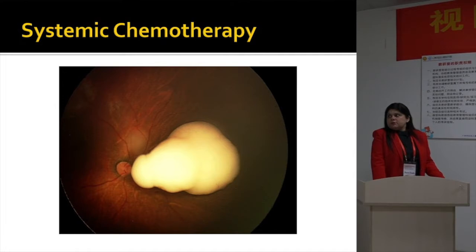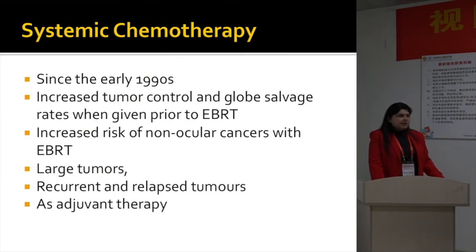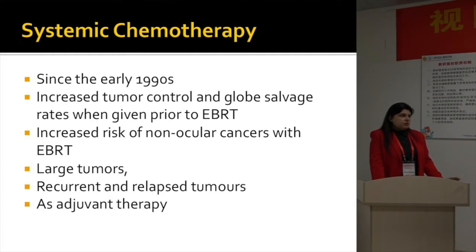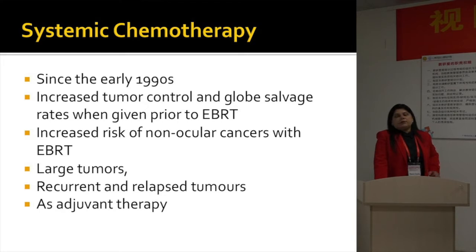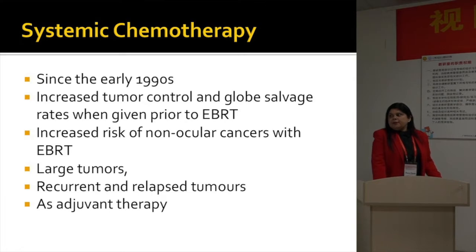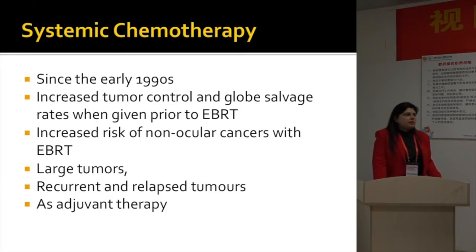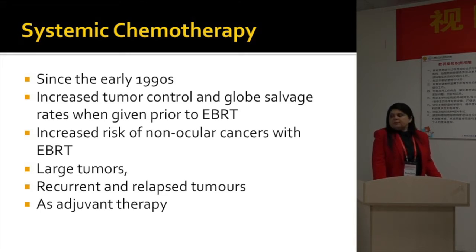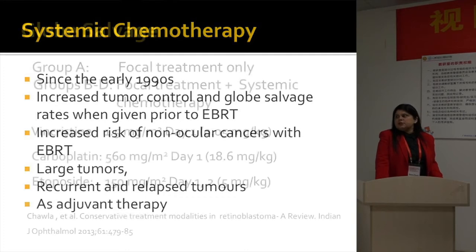When do we use systemic chemotherapy, how do we use it, and which systemic chemotherapy? There is nothing new about it — it has stood the test of time since the early 1990s, when its role was recognized in providing increased tumor control and globe salvage rates when given prior to external beam radiotherapy, which was the mainstay of treatment. Recognition that EBRT leads to increased risk of non-ocular cancers also contributed to systemic chemotherapy becoming more popular. It can be used for large tumors, recurrent and refractory tumors, and as adjuvant therapy.